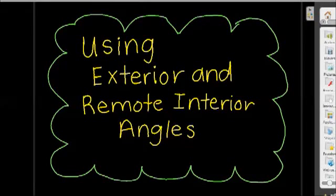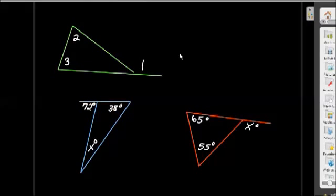This video is about using exterior and remote interior angles in a triangle. The basic idea about a remote interior angle is that a remote interior angle is an angle inside of the triangle that's farthest from an exterior angle.